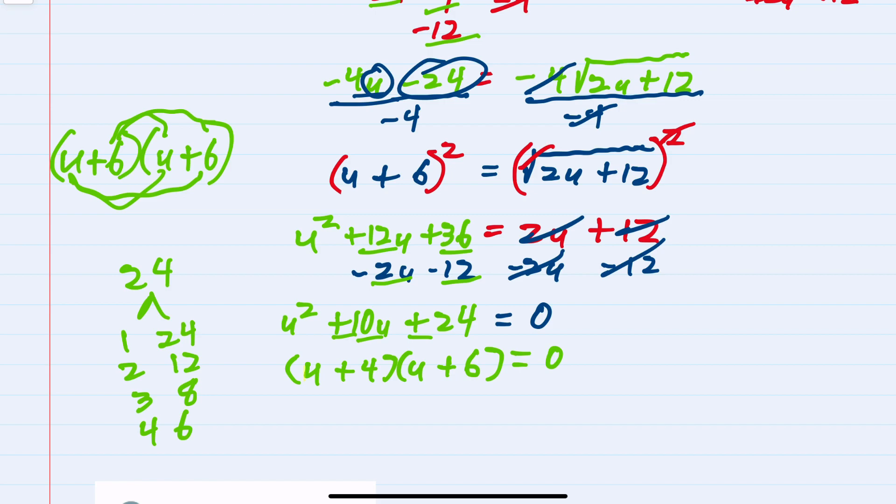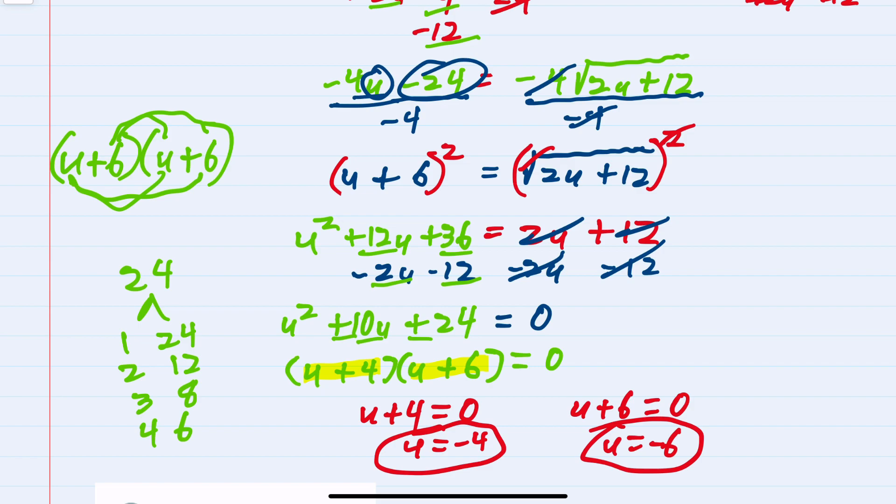If (u+4)(u+6) = 0, then either u+4 = 0, giving us u = -4, or u+6 = 0, giving us u = -6. We have two solutions: -4 and -6.